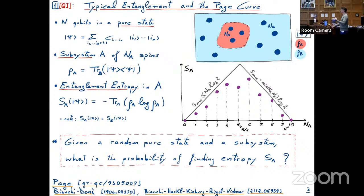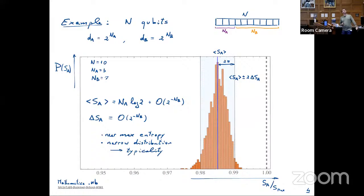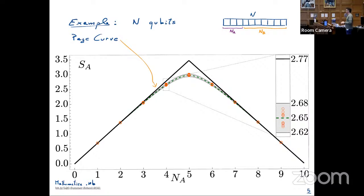To illustrate this concretely: take n qubits — for instance, 10. Take a random state, take three of the qubits, compute the entropy. Do it once, you get some value. Do it again and again, collect them into a histogram. The average is what was computed long ago by Page — it's close to the maximal entropy — and the variance is exponentially smaller. That gives you this notion of typicality. You can also collect this across subsystem sizes and get the page curve, with the dashed line being the average.